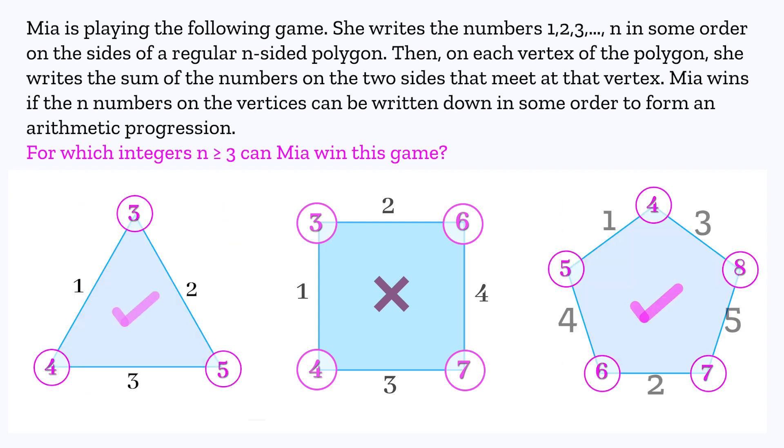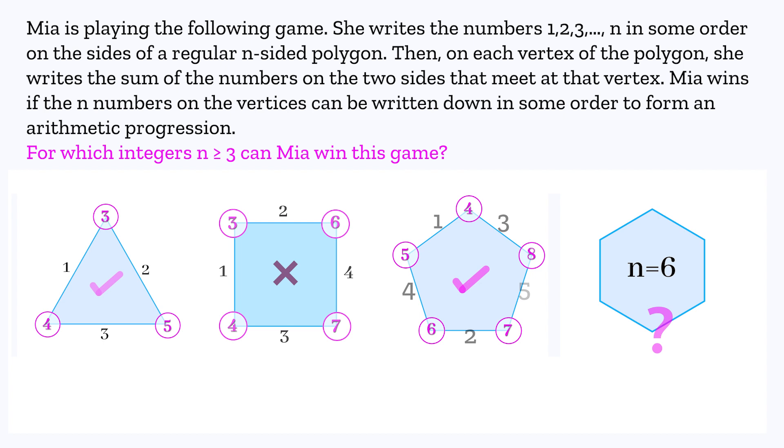n equals 5, we showed before that she can win. So we have 3 and 5 where she can, and 4 where she can't. The next logical step is to try n equals 6. So feel free to pause the video, have a try for n equals 6, and see what you come up with.